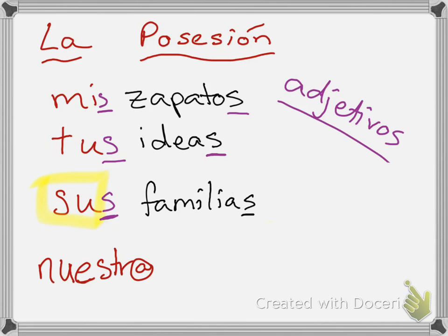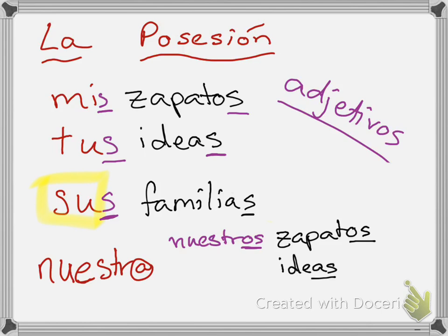And then let's look at nuestro or nuestra. If I was saying 'zapatos' — it ends in 'os,' therefore my possessive adjective is going to be 'nuestros.' It's going to match. If, however, I'm talking about 'ideas,' then I need to end in 'as': 'nuestras.' Nuestras ideas.